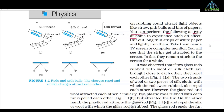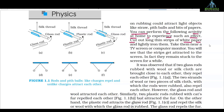You can perform the following activity at home: cut out long thin strips of white paper. I hope all of you have done this — when you cut small pieces of white paper and rub a plastic scale or comb in your dry hair and then bring it closer, the small pieces of paper start attracting towards that scale or comb. The TV screen also — if you bring these paper strips near a TV screen or computer screen, you will see that the strips get attracted to the screen because it's charged. In fact, they remain stuck to the screen for a while.